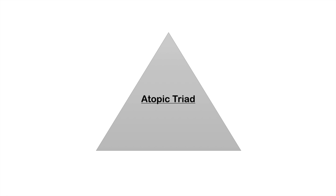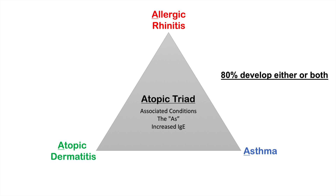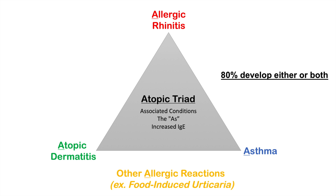Atopic dermatitis is associated with other conditions — we call this the atopic triad. The atopic triad conditions all start with the letter A and are associated with increased levels of immunoglobulin E. They include atopic dermatitis, allergic rhinitis, and asthma. It's estimated that approximately 80% of individuals with atopic dermatitis will develop either allergic rhinitis or asthma, or both.